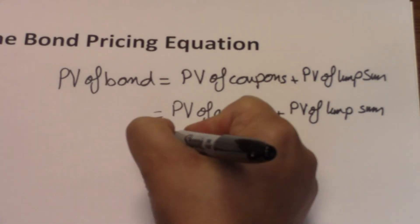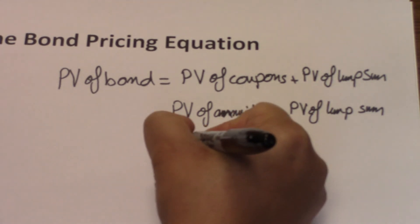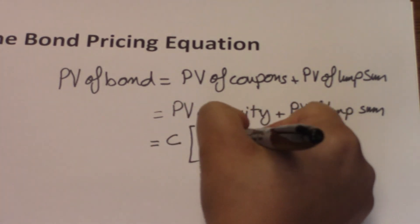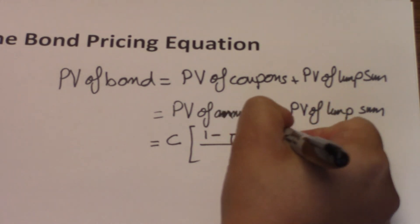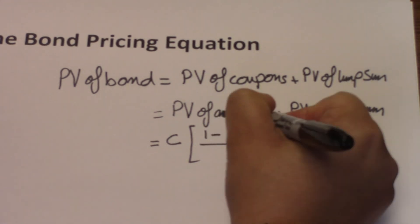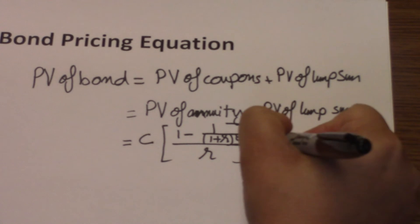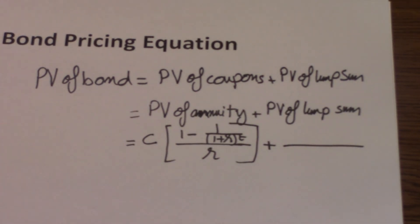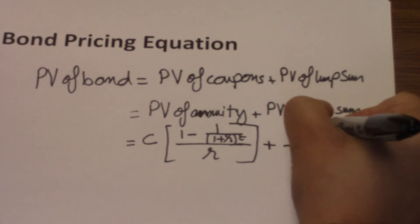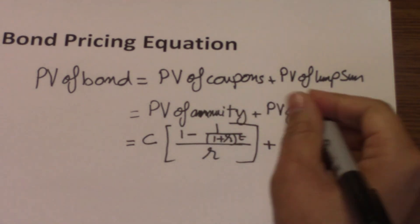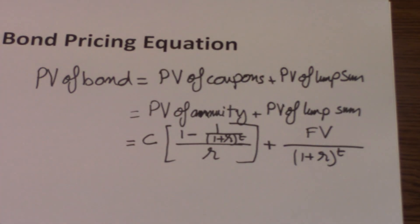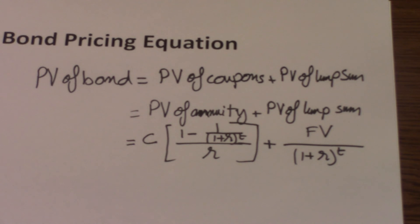This gives us the equation. The present value of the bond equals C times 1 minus 1 over (1 plus r) to the power t, over r, plus that lump sum you get at the end — the future value, face value, or par value — divided by (1 plus r) to the power t. And we are going to see how this equation can be applied.